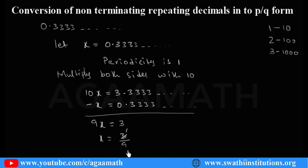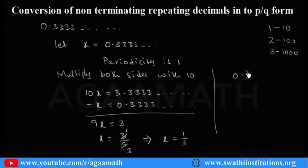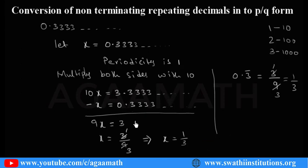So x equals 1 by 3. If you check, 1 divided by 3 gives this number. This is the conversion of non-terminating repeating decimals into p by q form. Now let us see the short method. For 0.3 bar, only one digit (3) is repeating, so we write 9 in the denominator: it is 3 by 9, which simplifies to 1 by 3. This is the short method; that was the general method.